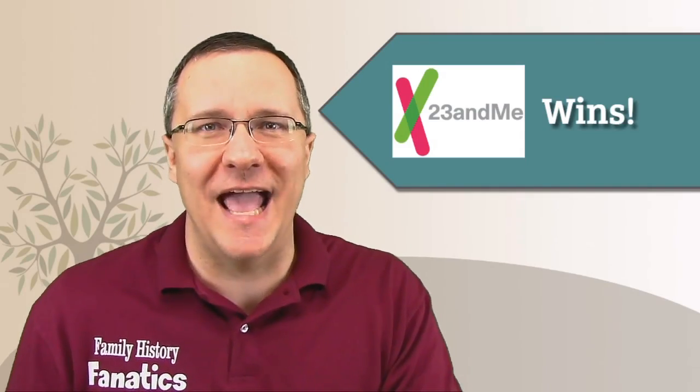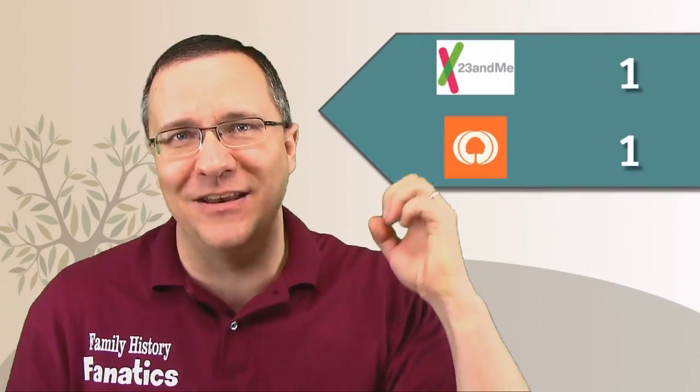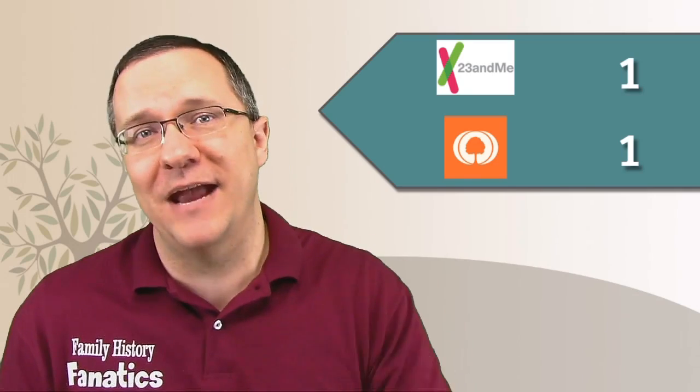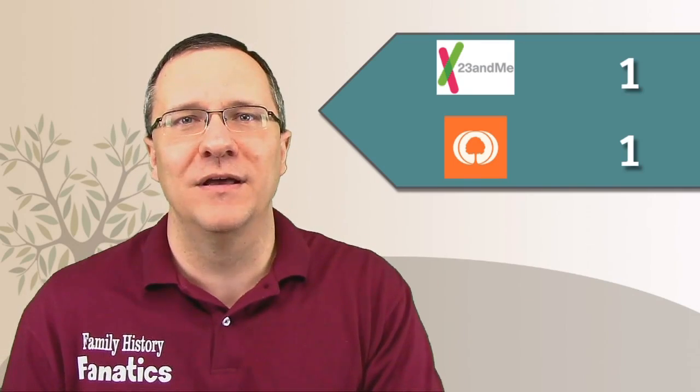23andMe gets the win, and we have a tied game now. Both 23andMe and MyHeritage each have one point. Let's see what they can do in round three.